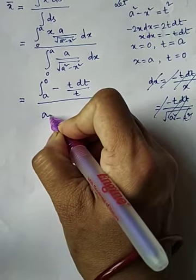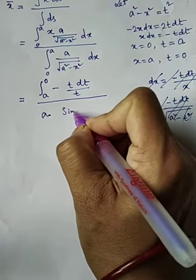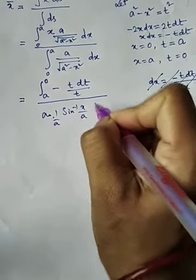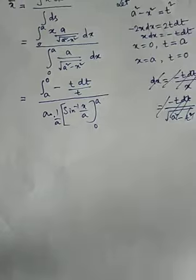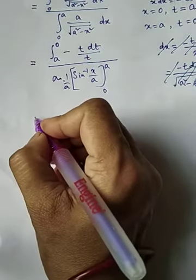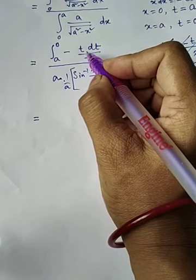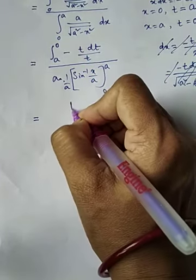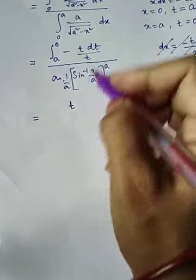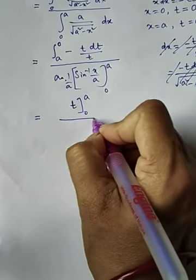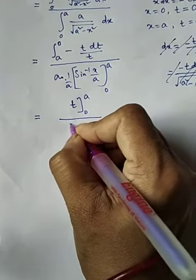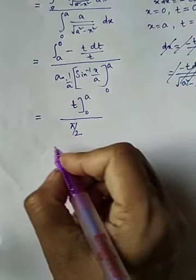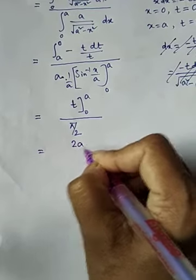For the denominator ∫₀ᵃ a / √(a² − x²) dx, we use the standard formula: ∫ 1/√(a² − x²) dx = sin⁻¹(x/a). So the denominator evaluates to a · [sin⁻¹(x/a)]₀ᵃ = a · (sin⁻¹(1) − sin⁻¹(0)) = a · (π/2 − 0) = aπ/2. Therefore x̄ = a / (aπ/2) = 2a/π.